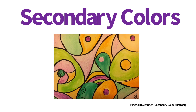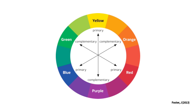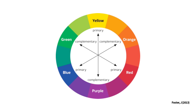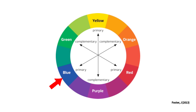Your secondary colors are orange, green, and purple. You mix red and yellow to get orange, you mix yellow and blue to get green, and you mix blue and red to get purple.